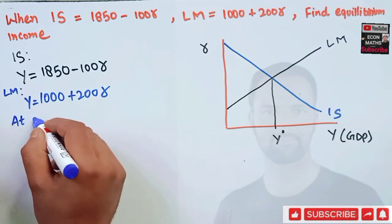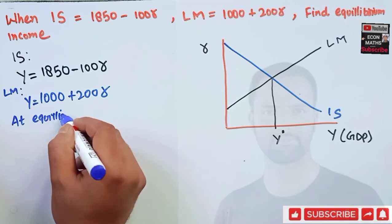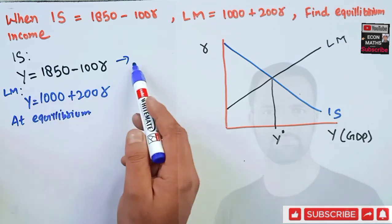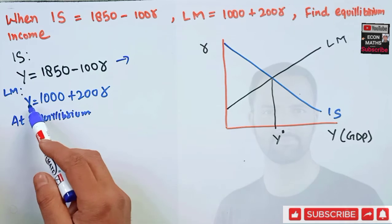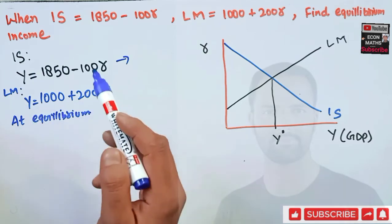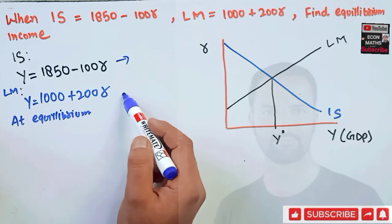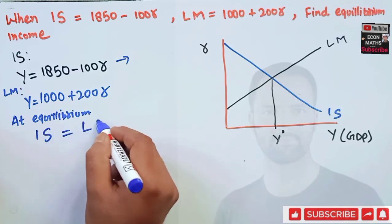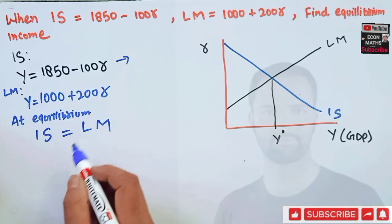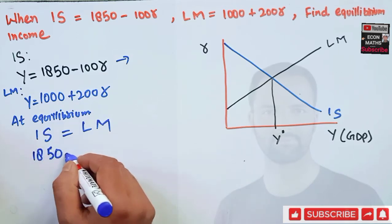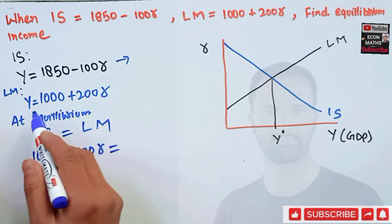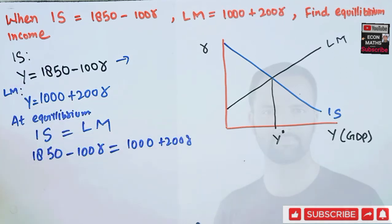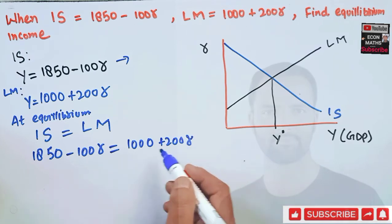The IS shows us goods market equilibrium and the LM shows us money market equilibrium. At equilibrium, IS equals LM. So we set: 1850 minus 100R equal to 1000 plus 200R. We can cancel Y on each side and solve for R.